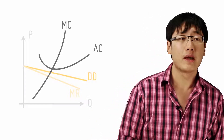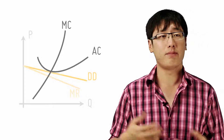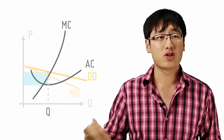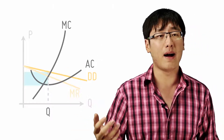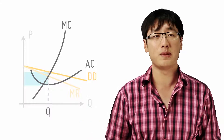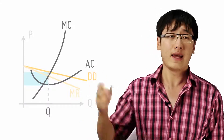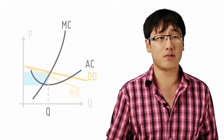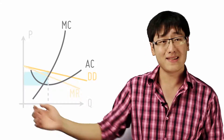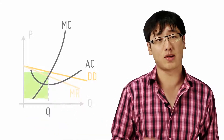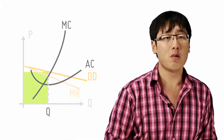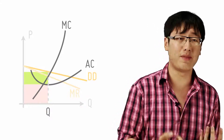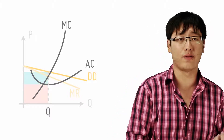You can see how it's shaded here. When we find the profit maximizing quantity at MC equals MR, we extrapolate it up and find the distance between the AR and the AC. The AR length times the quantity gives us the revenue, and the AC length times the quantity gives us the total cost. When we take total revenue minus total cost, we get the profit for the firm.